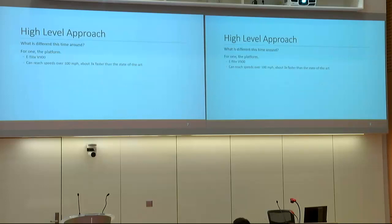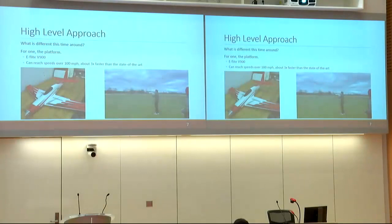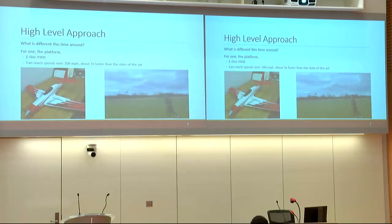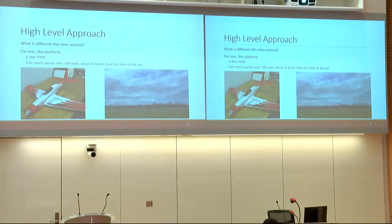How does our project fit in if so much has already been done? The platform we're using is entirely different. The E-Flight V900 is a stock RC airplane that comes ready to fly and can reach speeds of over 100 miles per hour — about three times faster than the state of the art. You can see how sleek this airplane is; there's almost no room to add additional equipment, and a video shows it zooming out of the frame at 30 to 40 miles per hour.